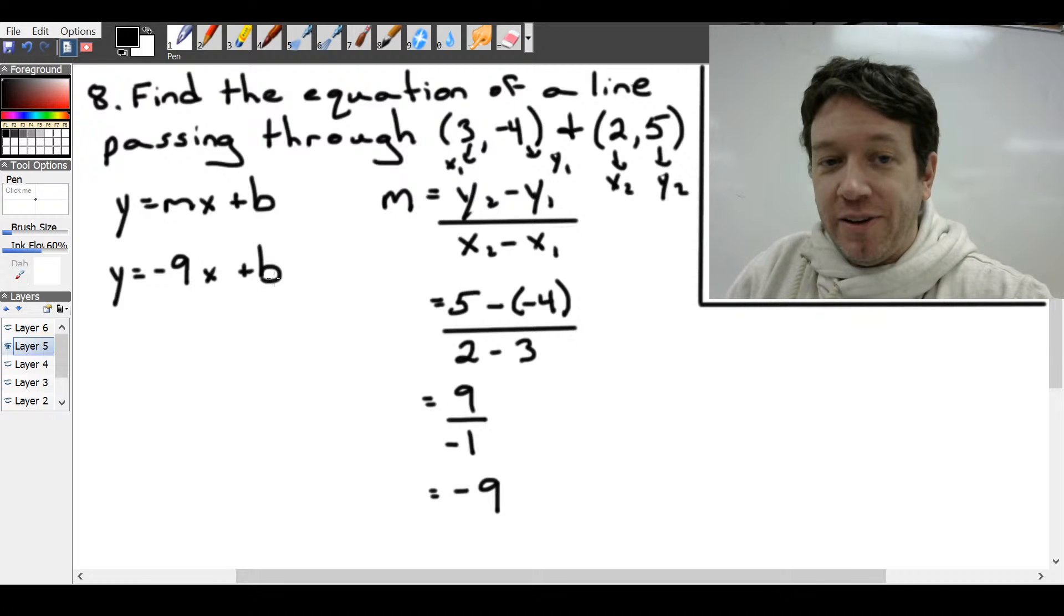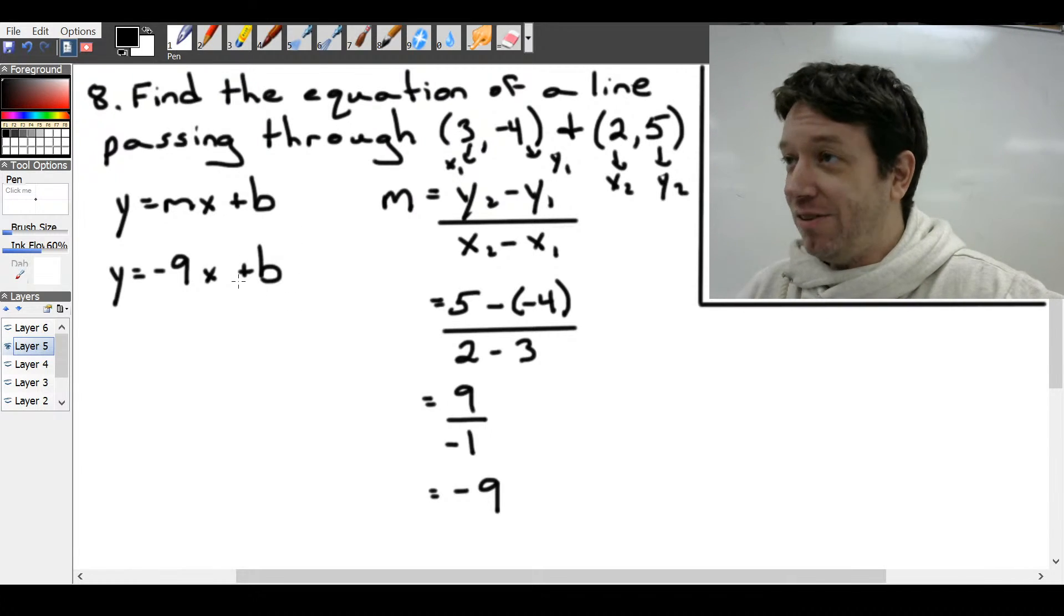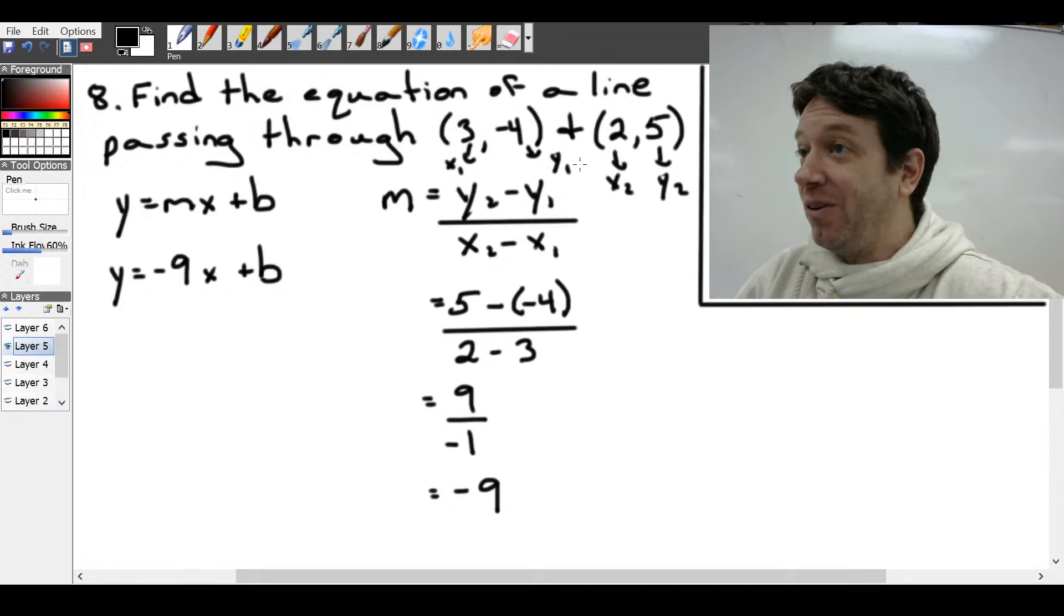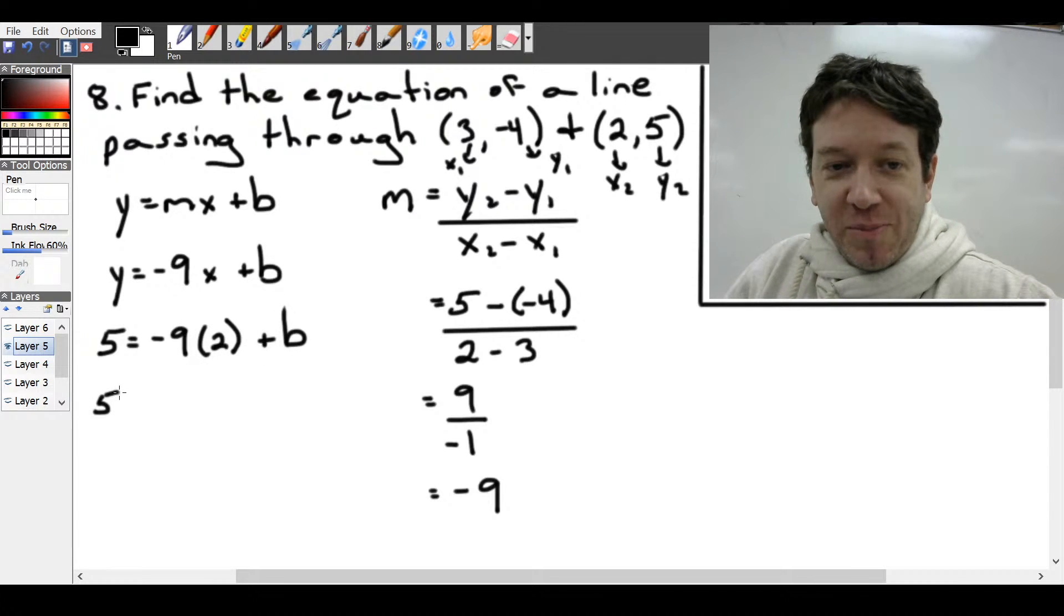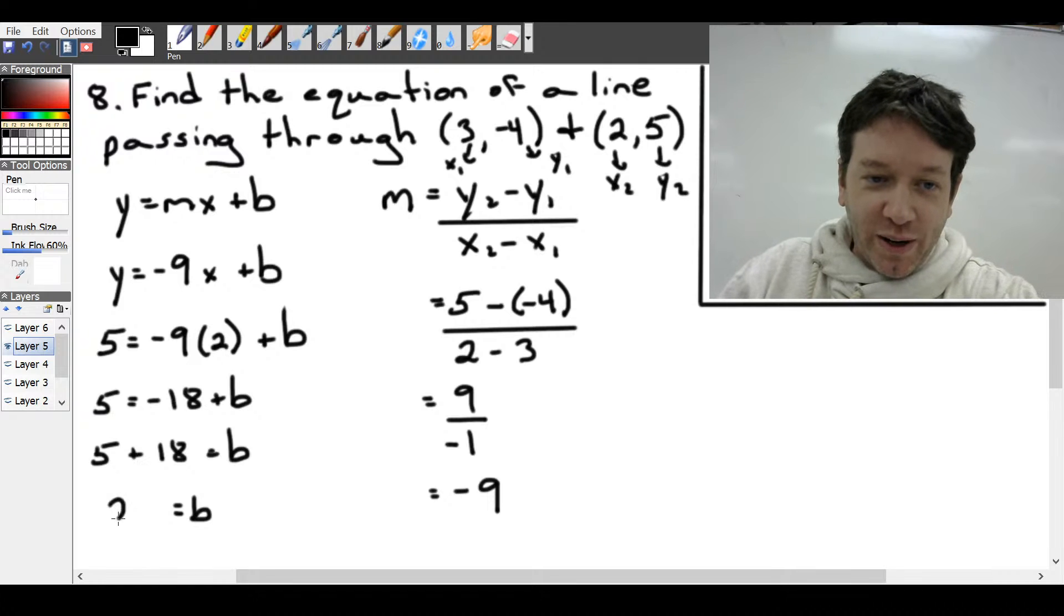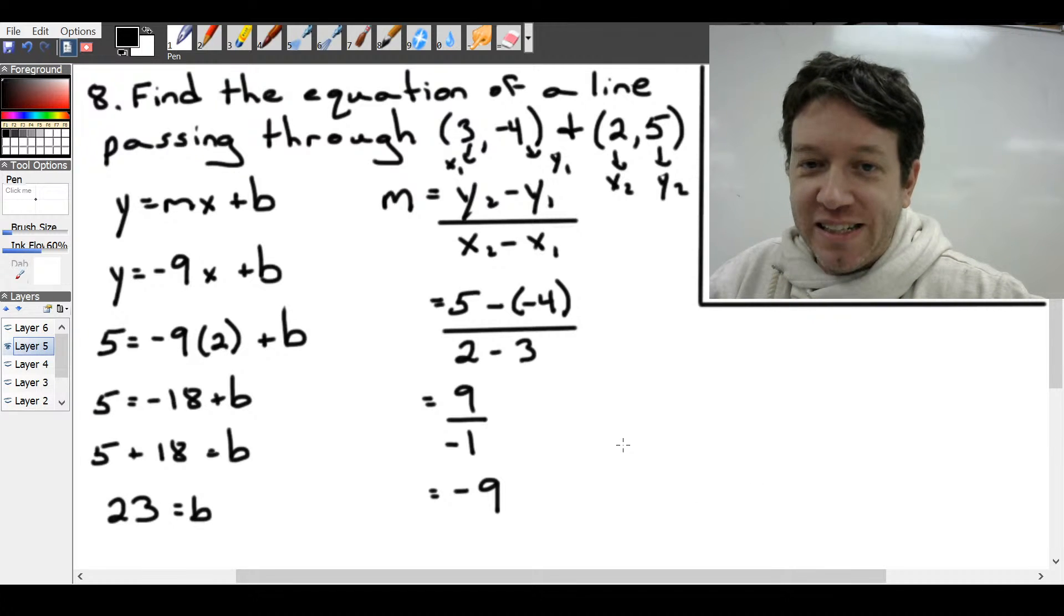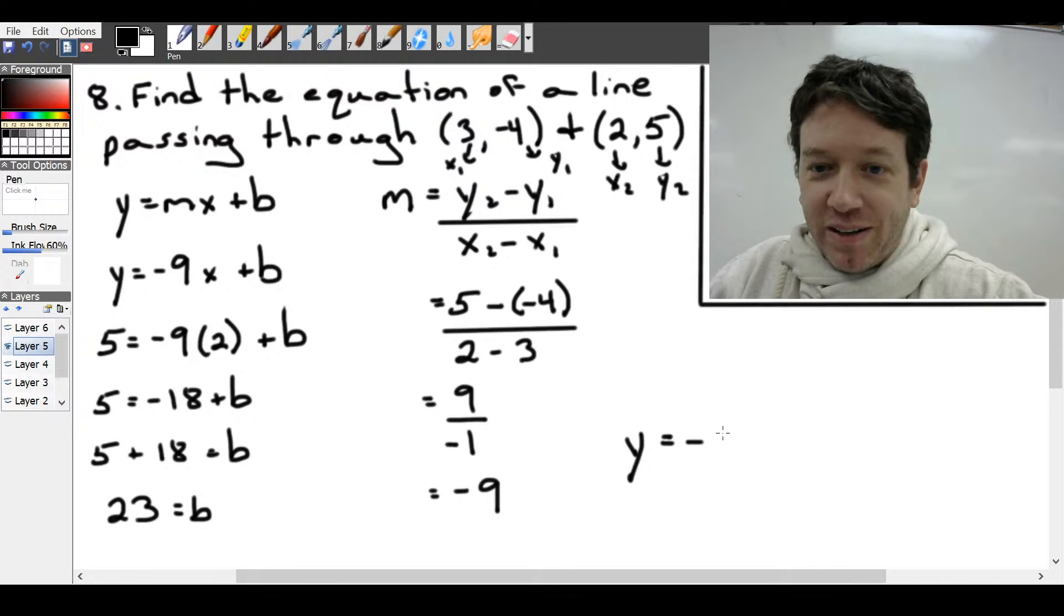Now what we need, so I can just rewrite this as y equals minus 9x plus b. I need that b. As long as I have any point on the line, I can solve for it. I actually have two points on the line. Just pick one and substitute in for x and y. So let's do the 2 and 5, because I don't like negative numbers. Let's do 2 and 5. So y is 5, so I'm going to replace y with 5. It equals minus 9, and x is 2. And then we have that plus b. So minus 9 times 2 is minus 18 plus b. If I add 18 to both sides of the equation, we will end up with b equals 18 plus 5, which is 23. So now we can write our equation as y equals the slope, m minus 9x plus b, the y-intercept 23.